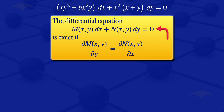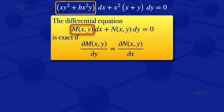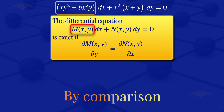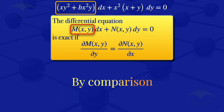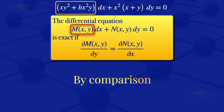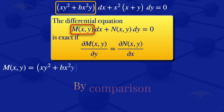Now looking at this equation, we see that the coefficient of dx is M(x,y). The coefficient of dx is equal to xy² + b times x²y. By comparison of the coefficients of dx, we see that M = xy² + bx²y.